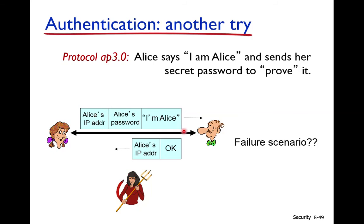From this password, IP address, and message, Bob can understand that this message is from Alice. However, when this message is exchanged, Alice's password is sent in plain text — it is visible. This message passes through the internet, which is a shared network, so anyone can access it.